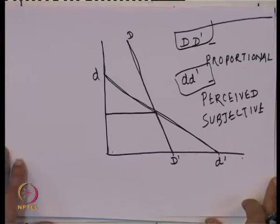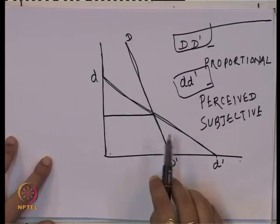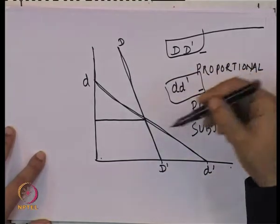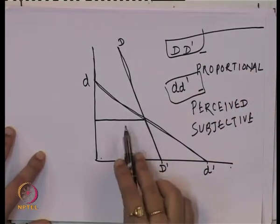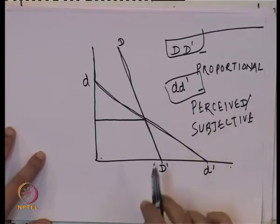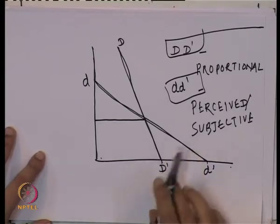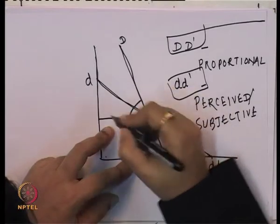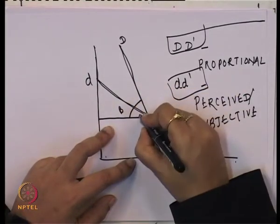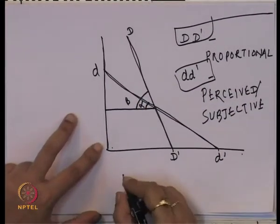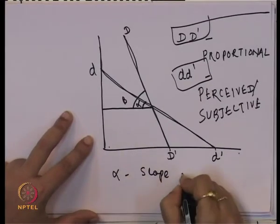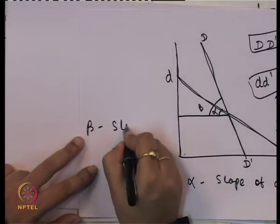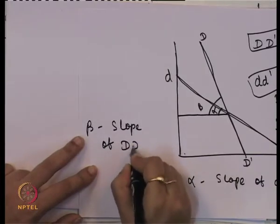The essential difference between these two demand curves: in the proportional demand curve, when one firm changes price others follow; in the perceived demand curve, when one firm changes others do not follow. The perceived demand curve is more elastic because any small change in the price of this firm affects quantity demanded in a larger extent. The slope of the perceived demand curve is alpha, and the slope of the proportional demand curve is beta.